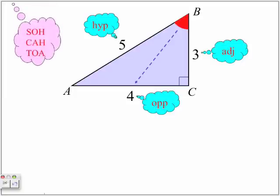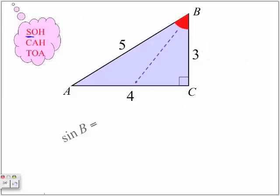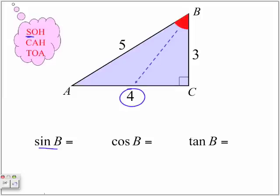In terms of SOHCAHTOA, if we're trying to find the sine of angle B, if we're trying to find sine B or cosine B or tangent B, sine of B is the opposite divided by the hypotenuse.